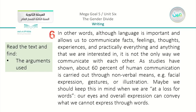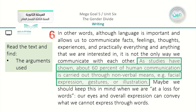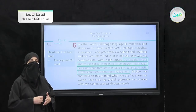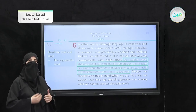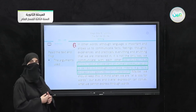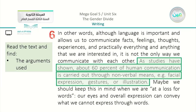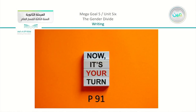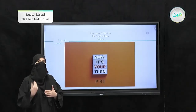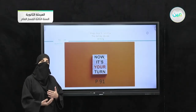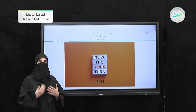In paragraph six, the argument is: 'As studies have shown, about 60 percent of human communication is carried out through nonverbal means — for example, facial expressions, gestures, or illustration.' This is a very strong argument because it is based on studies. So the passage in general is about verbal and nonverbal communication, and how people understand each other even when they don't need to speak.